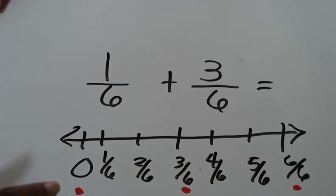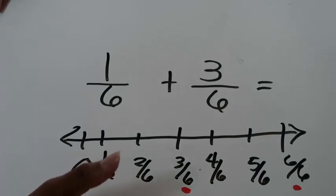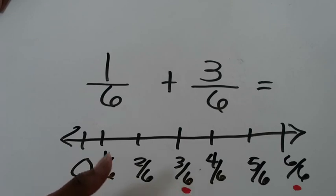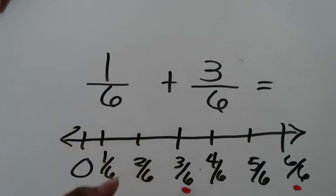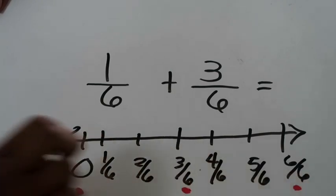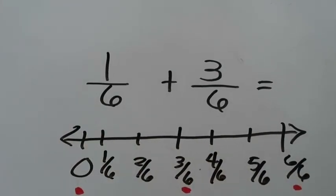Zero is self-explanatory — that represents nothing. Three sixths is the halfway mark. You should recognize that three sixths is the same thing as one half. If you have six slices of pizza and you eat three of those slices, you have eaten half of the pizza. The third benchmark spot is one whole — six sixths is the same thing as one whole. Using the pizza analogy, if there are six slices of pizza in total and you ate all six of them, then you ate one whole pizza. Those are what those three red dots represent.